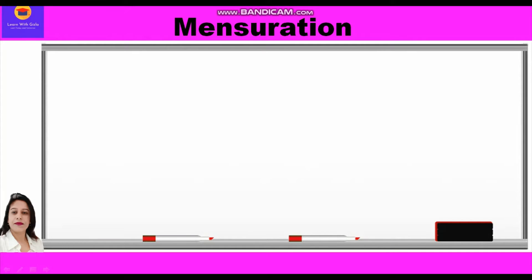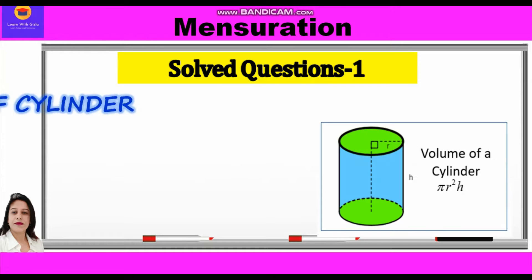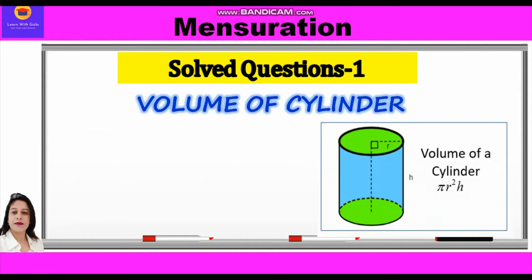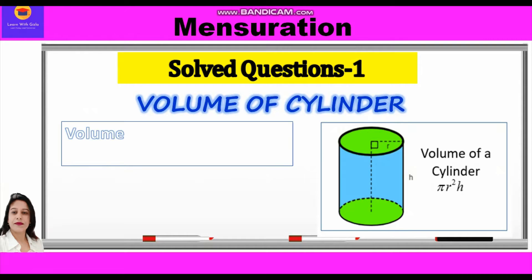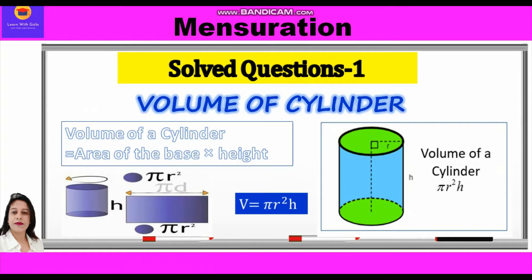Hi everyone! In this video of mensuration, we shall take up some solved questions related to volume of cylinder. First of all, let us revise the formula for volume of a cylinder. Volume of a cylinder is equal to area of the base into height, and we know the base is circular. Therefore, the volume is equal to pi r square h.